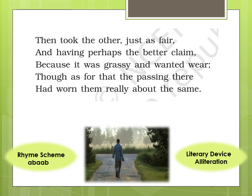The literary device in this stanza is alliteration. Alliteration is the repetition of a consonant sound. In the fourth line: 'though as for that the passing there' — you can see 'T' is a consonant, and it is repeated: 'though', 'that', 'the', 'there' — the letter T appears four times in this line. When any consonant letter is repeated again and again in a line, the literary device is called alliteration.